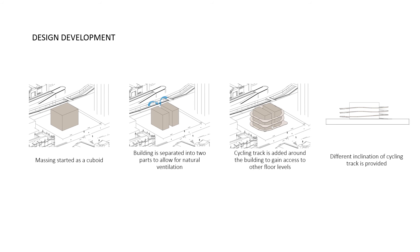Now I'm going to talk about my design development, which started out as a keyboard massing and is then separated into two parts to allow for natural ventilation within the building as an approach towards green design. Next, a cycling track is added around the building for cyclists to gain access to different floor levels. Different inclinations for the cycling track are also designed to provide different experiences.